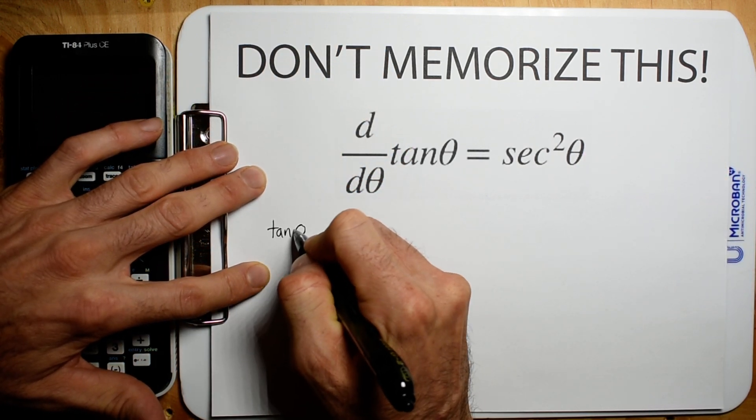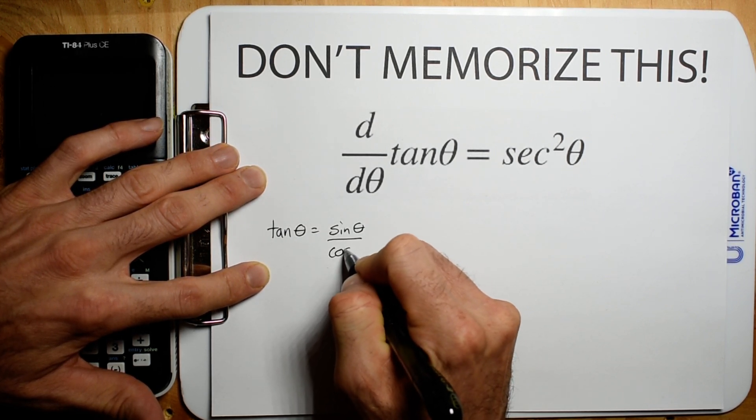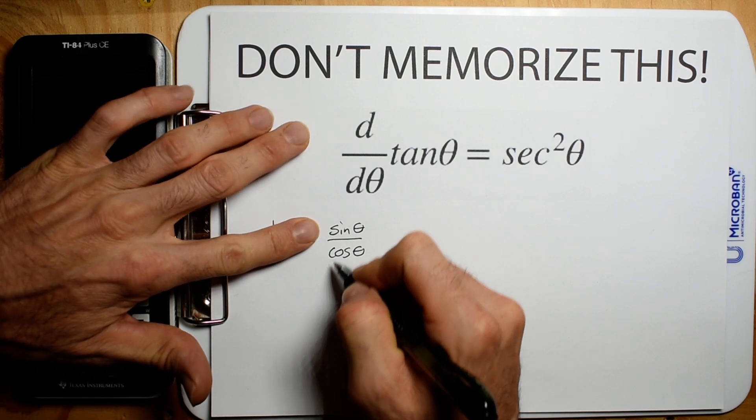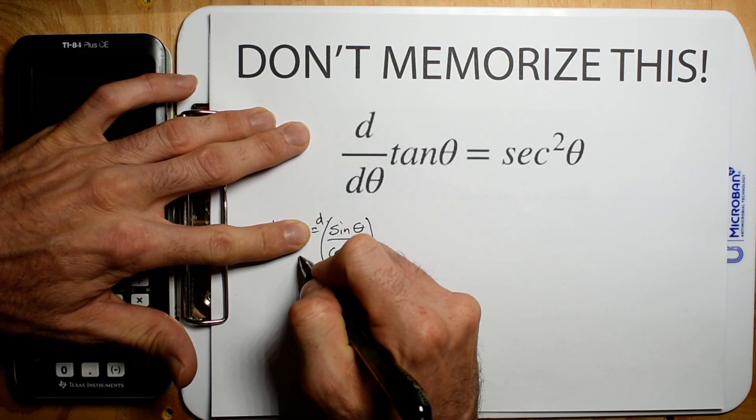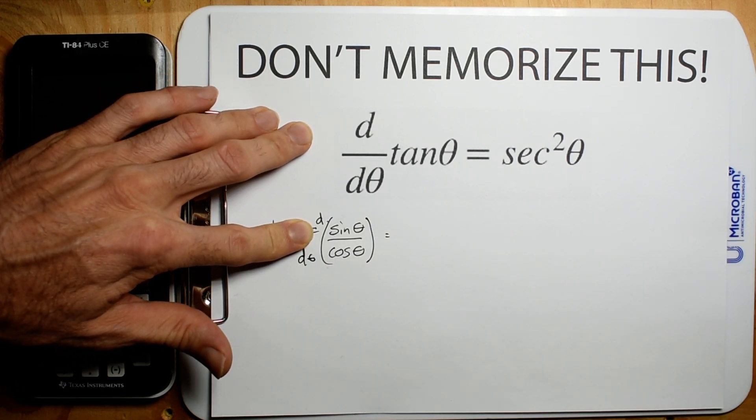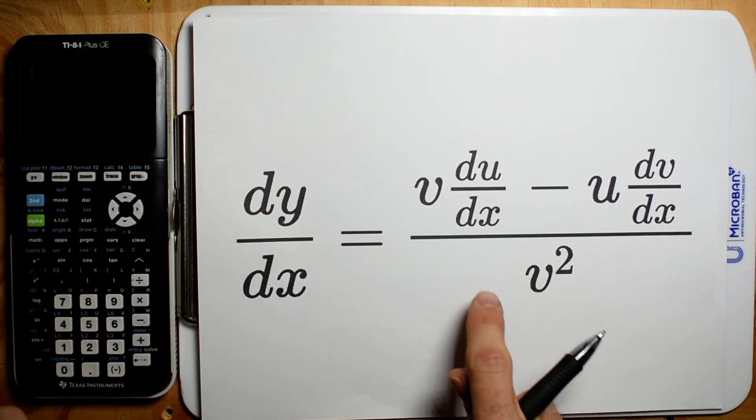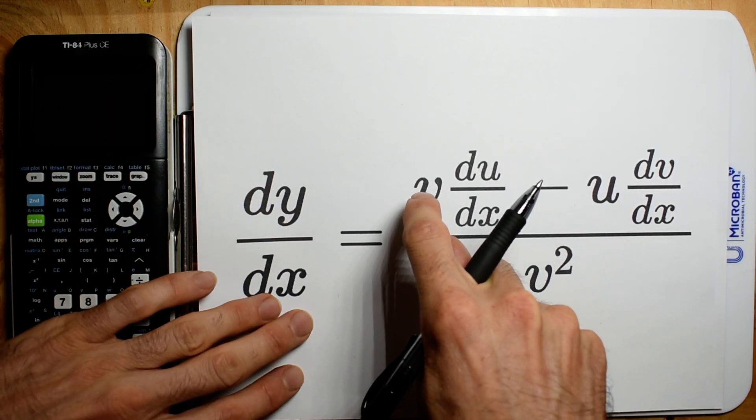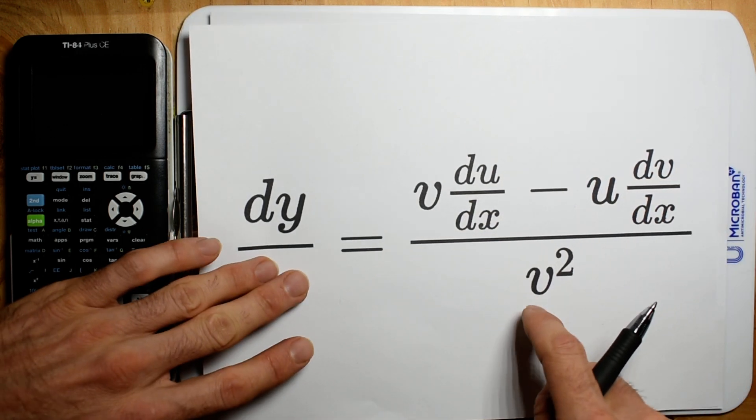So we're going to take tangent theta and turn it into sine theta divided by cosine theta. So now we're going to take the derivative of this with respect to theta, and we're going to use the quotient rule. I'm going to link a video to the quotient rule on a very simple problem, but it's bottom d top minus top d bottom divided by the bottom squared.